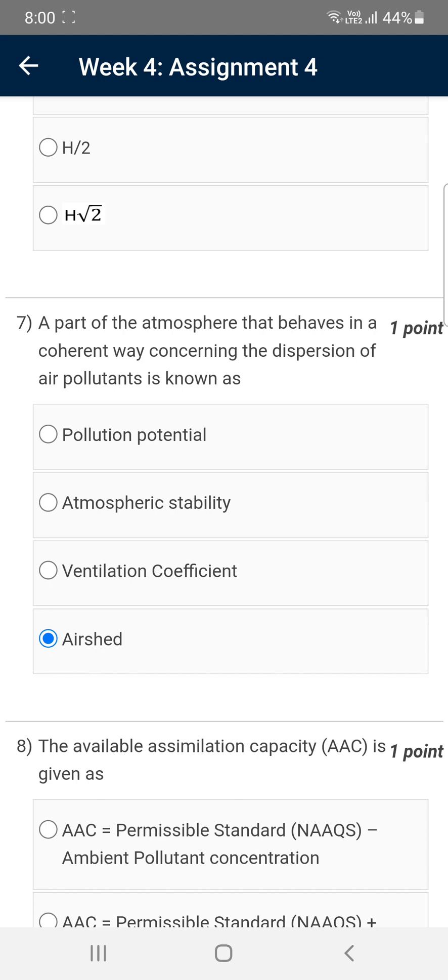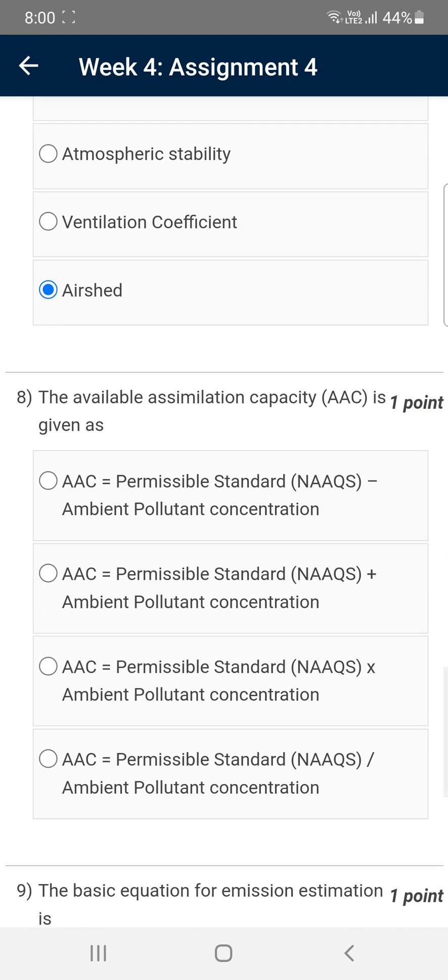Moving on to the eighth question: The available assimilation capacity (AAC) is given as... They're asking the formula. We calculate the AAC as shown in the first option: AAC equals permissible standard minus ambient pollution concentration. Mark the first option as the correct answer.